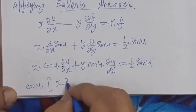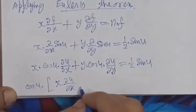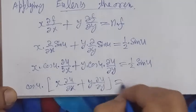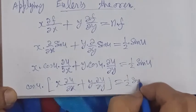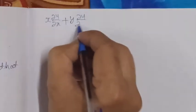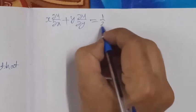We get cos u times (x del u over del x plus y del u over del y) equals 1 by 2 sin u. Dividing the right hand side by cos u.